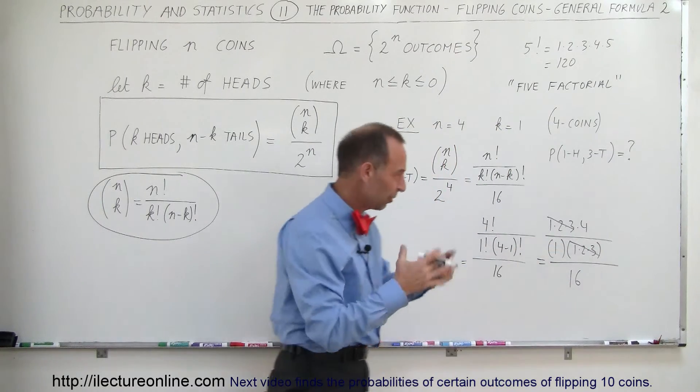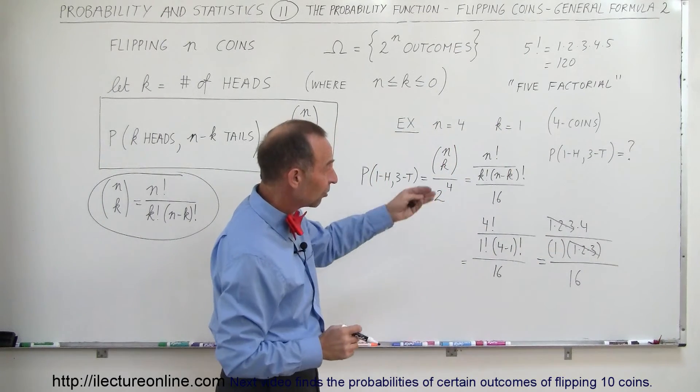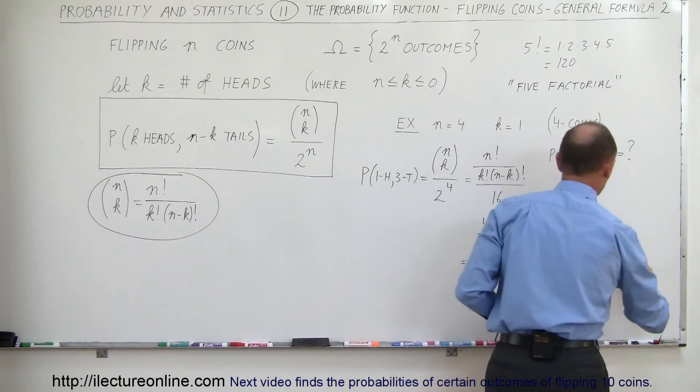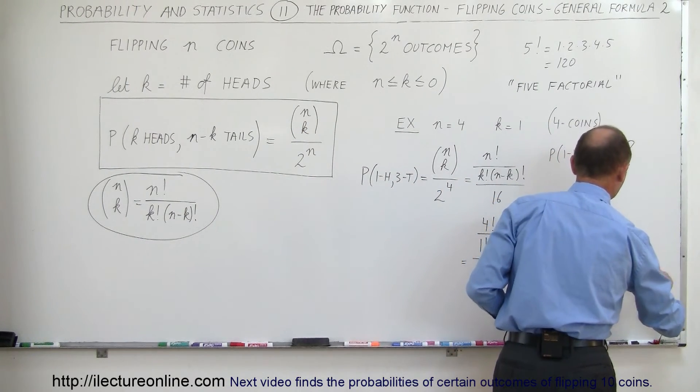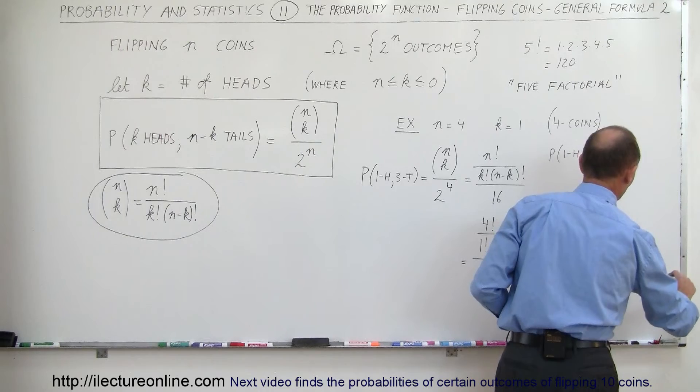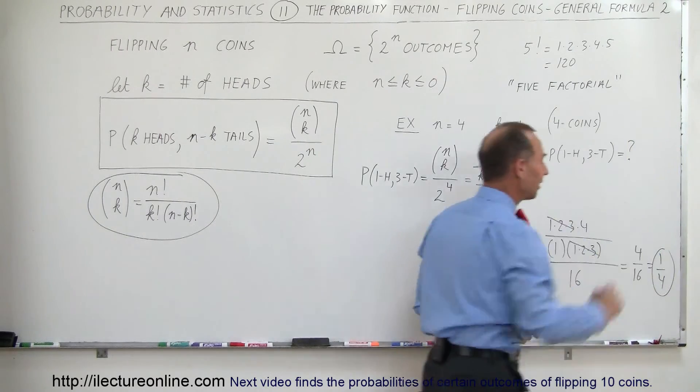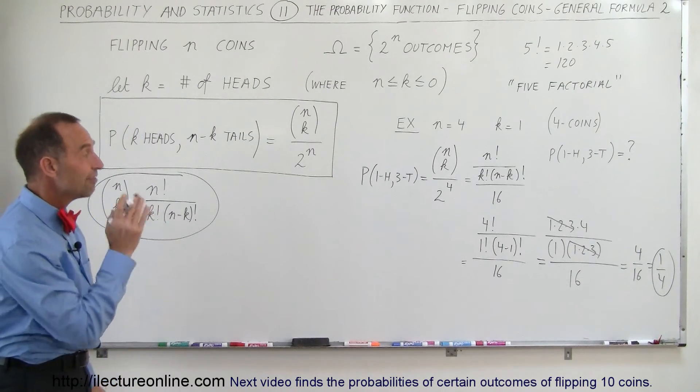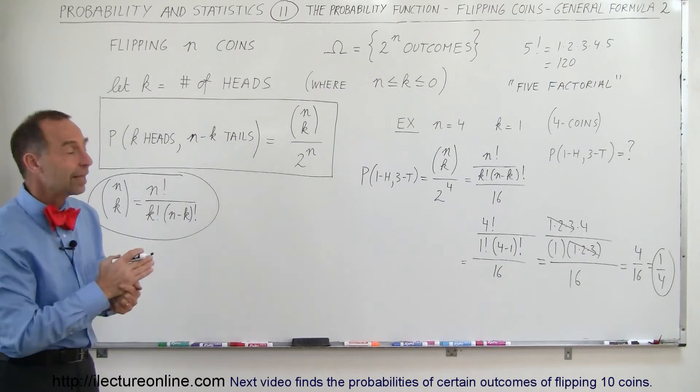Which means you simply are left with 4 divided by 1, divided by 16, or simply 4 divided by 16, which is equal to 1 over 4. And so there it is. That's the probability. If you flip 4 coins, and you want the event where you have 1 head and 3 tails, the probability is that there's 1 out of 4 that that will occur when you flip 4 coins.